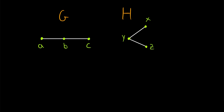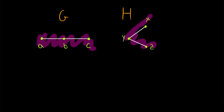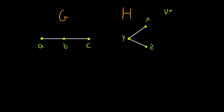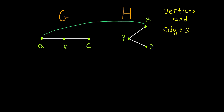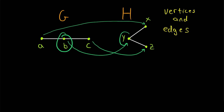We want to formalize the idea of these two graphs having the same structure. What two things are graphs made of? Those would be, of course, vertices and edges. So if G is isomorphic to H, then certainly we should be able to match each vertex of G to a vertex of H, such that each vertex in G plays the same role as the vertex that it's matched to in H.